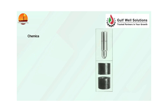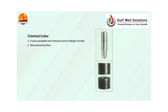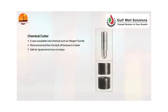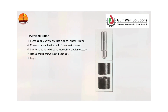Chemical cutter: it uses a propellant and chemical such as halogen fluoride. It is more economical than the back off because it is faster, safe for rig personnel since no torque of the pipe is necessary, no flare or burn or swelling of the cut pipe, and it requires 100 feet of clean fluid above the tool when the fish cut is made.